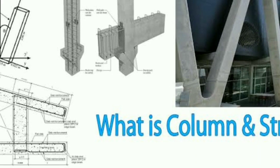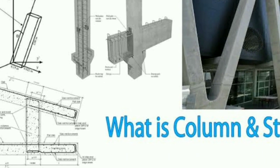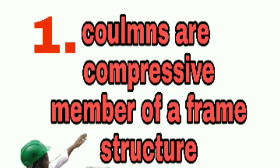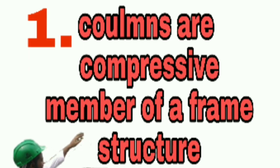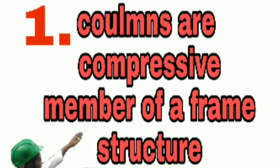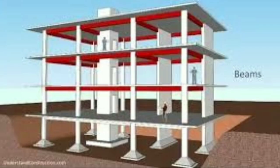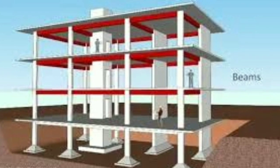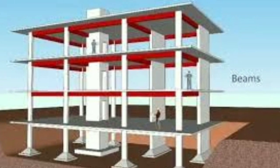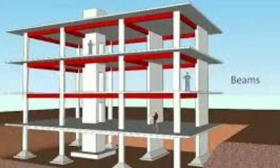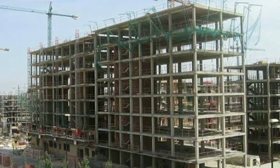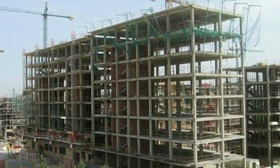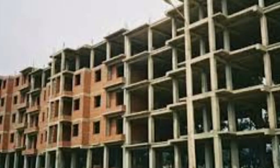The column — in general, if the video is chosen particularly about the column — columns are compressive members in a frame structure. Beams are horizontal spans and columns are vertical spans. So the column position is vertical.